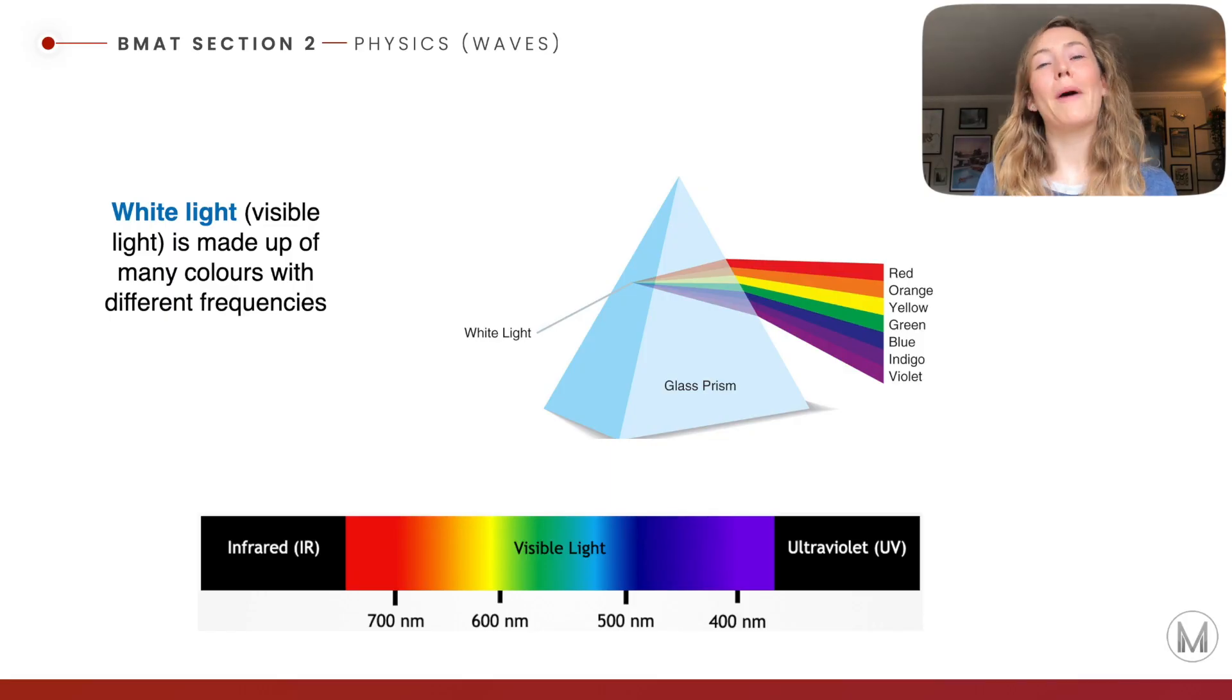Let's talk a little bit more about the visible part of the spectrum. We've got white light here. It's visible light and it's made up of many colours of different frequencies. We've got our red down here. Richard of York gained battle in vain might be something you remember from school, all the way to violet at the other end.